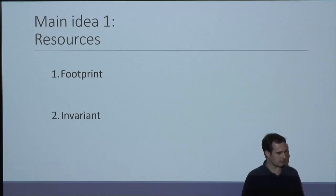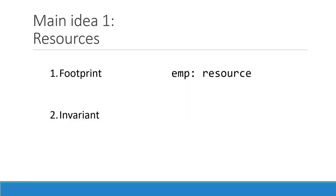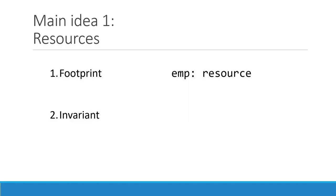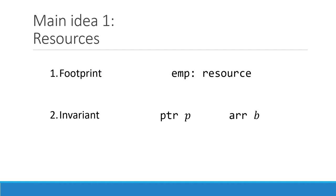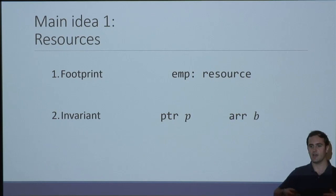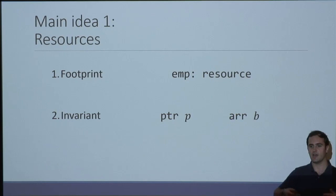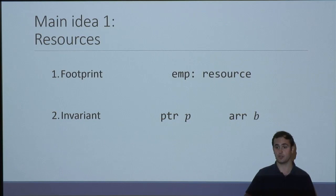Given those two simple ideas, we can define some examples of resources. First, the empty resource: the footprint is just the empty set of locations, no footprint associated, and the invariant is always true. Then we have more interesting resources: pointer resources and array resources, which each point to a single cell in our memory model, and the invariant is that they're live — meaning they've been allocated and not dereferenced.